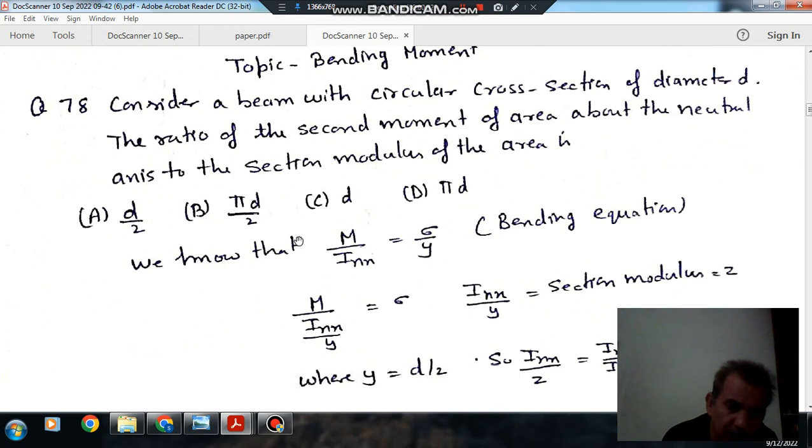We know that from bending equation, M by I is equal to sigma by y, or it can be written as M by I_xx divided by y is equal to sigma.